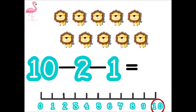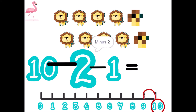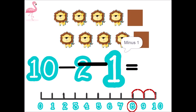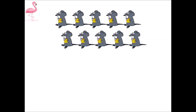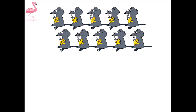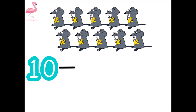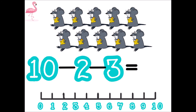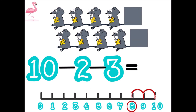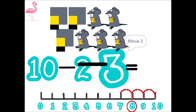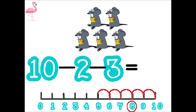1, 2, 3, 4, 5, 6, 7, 8, 9, 10. Seven. 10 minus 2 minus 3 equal. 1, 2, 3, 4, 5, 6, 7, 8, 9, 10.